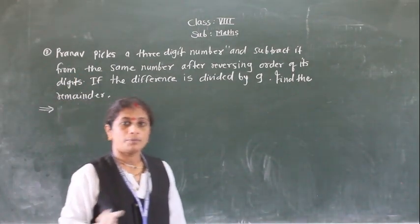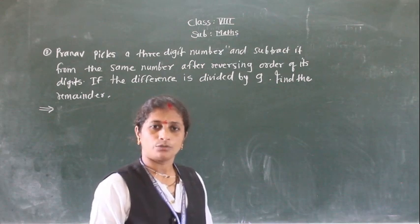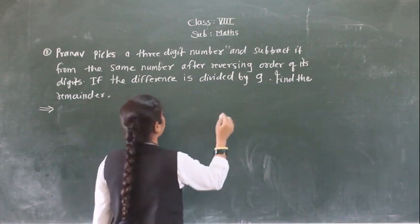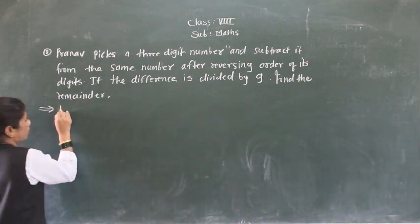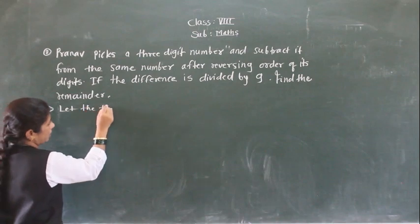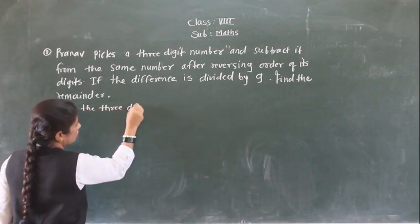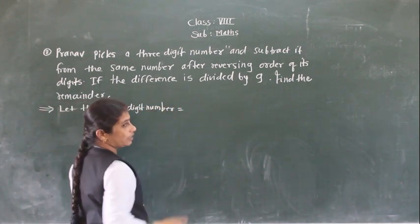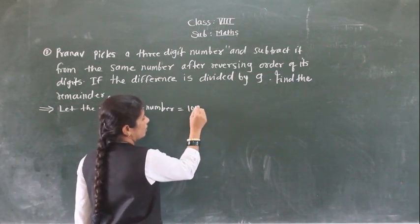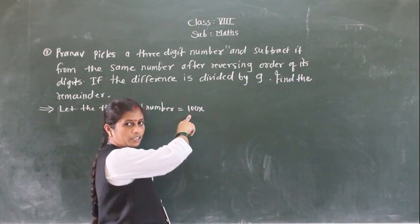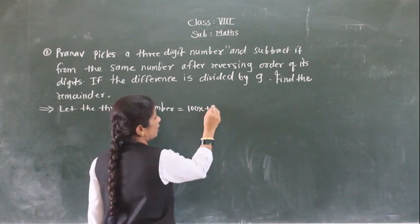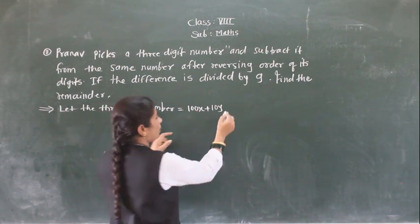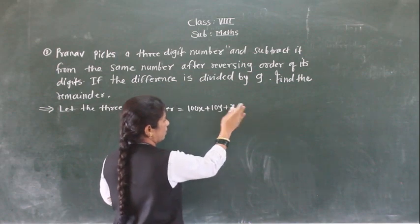First we will see what the 3-digit number is. Just like in the previous example we saw how to write the 2-digit number, the same way we write the 3-digit number because we don't know what the 3-digit number is. So let the 3-digit number be: we will write 100x because it is the 3-digit number. 100x is there, right? Plus 10y — we are taking 100x because x is the unknown number.